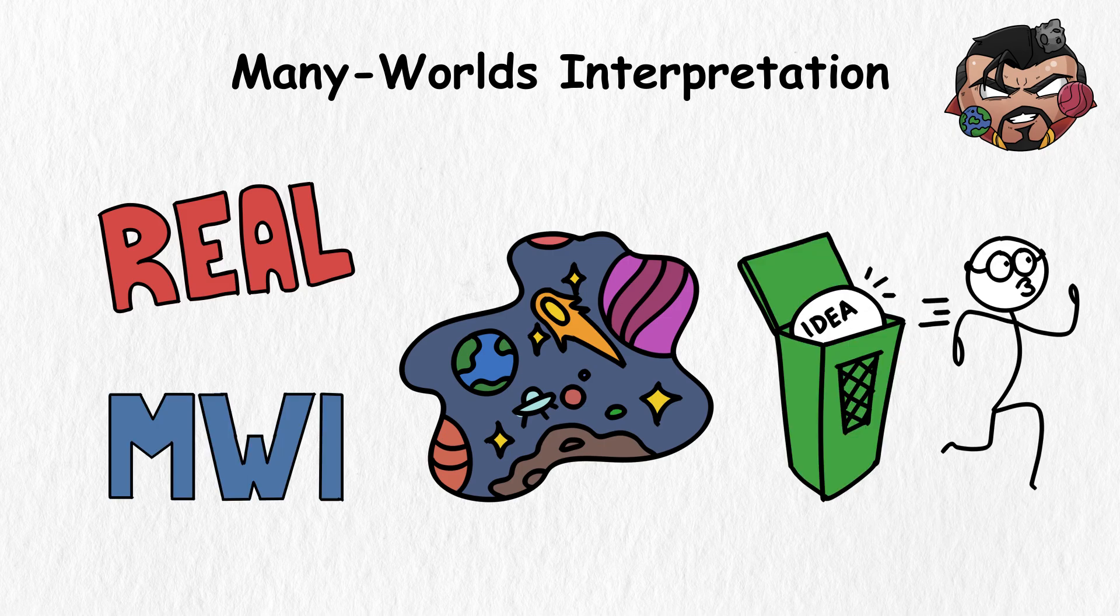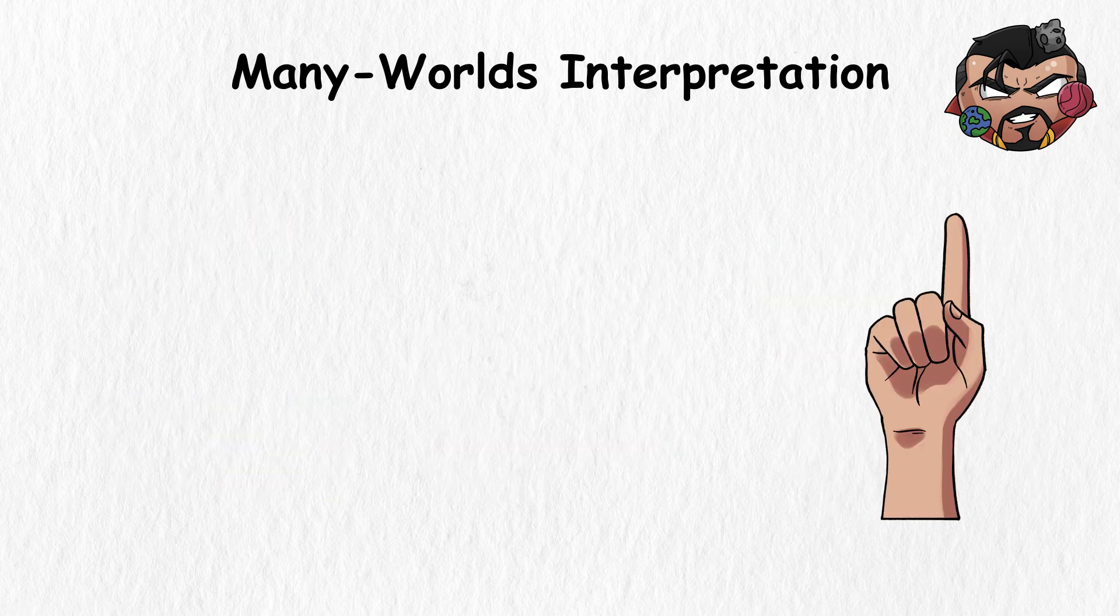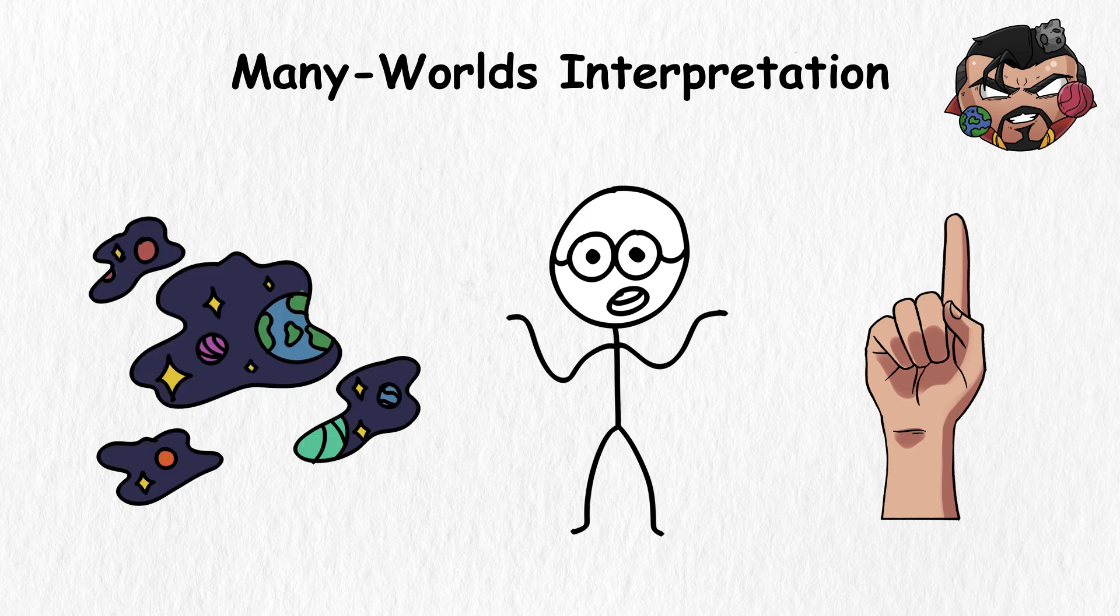The MWI suggests that all these states are real and that each of these states exist in their own universes. Basically, the MWI removes the idea that there is only one outcome for every decision. Instead, it says there are infinite parallel universes where every outcome can happen.